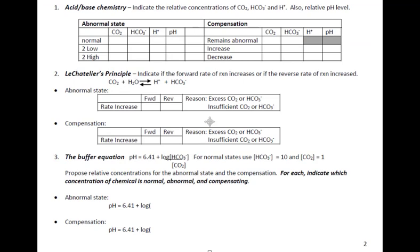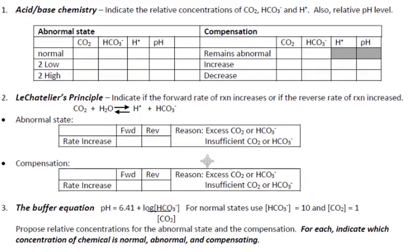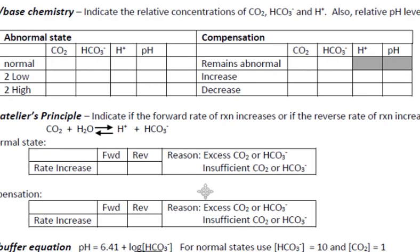The summary section needs to be reflected in each of the explanations. In the acid-base explanation, you need to provide the relative concentrations of CO2, bicarbonate, and hydronium, and the relative pH. We have already concluded that the CO2 is too high, so I'm going to put an X in this area. The bicarbonate is normal, the hydronium ion is too high, therefore the pH is too low.